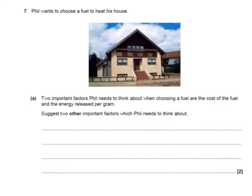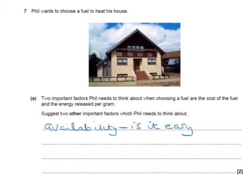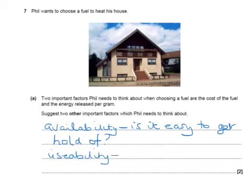Here's a typical GCSE question. Phil wants to choose a fuel to heat his house. Two important factors that Phil needs to think about when choosing a fuel are the cost of the fuel and the energy release per gram. Suggest two other important factors that Phil needs to think about. Well, one factor Phil might consider is the availability of the fuel — for example, is it easy to get hold of? A second factor is the usability of the fuel — for example, is it easy to light?